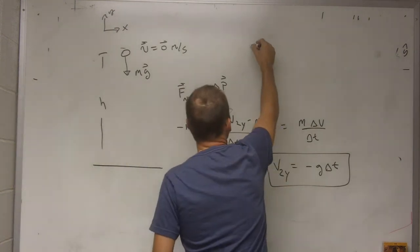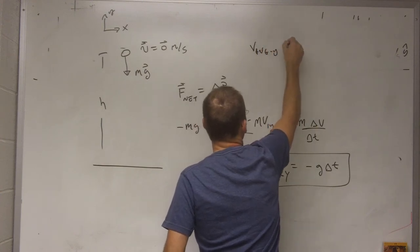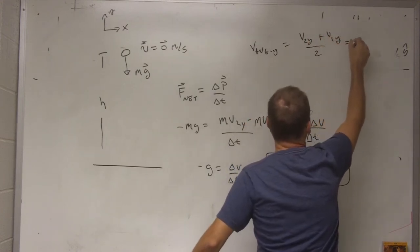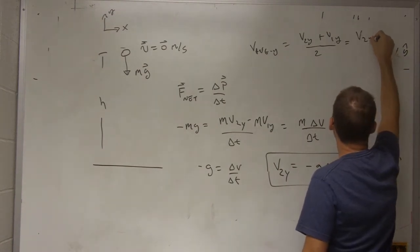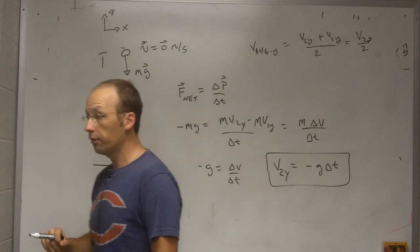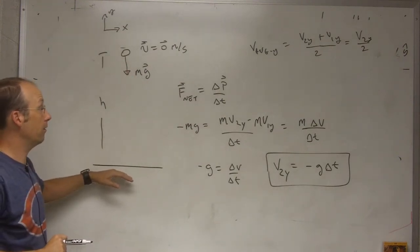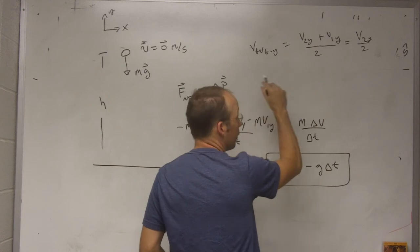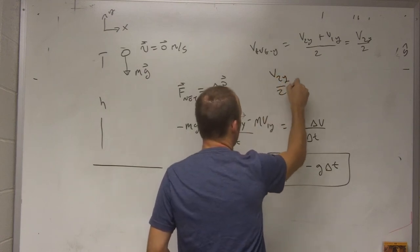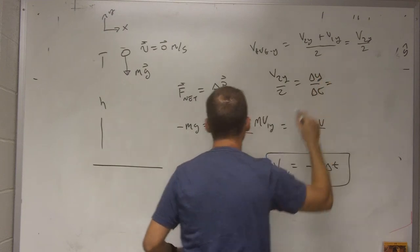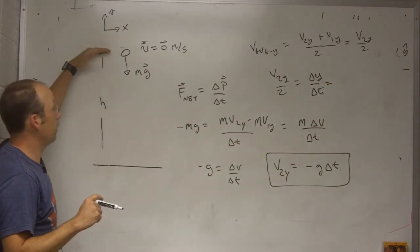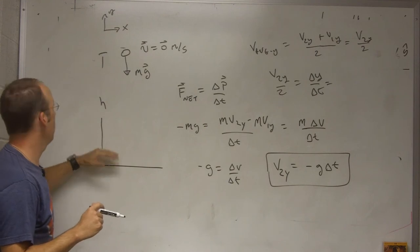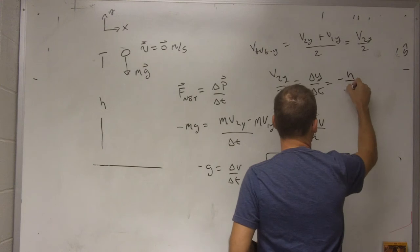So the average velocity in the y direction is going to be v_2y plus v_1y over 2, and that initial velocity was zero, so this is v_2y over 2. So that's the average velocity that falls down here. So then I can say that's also equal to delta y over delta t, because the average velocity is delta y over delta t. So v_2y over 2 equals delta y over delta t. And what's delta y? If this is y equals zero, and that's y1, then it starts off at h, and it ends up at zero. So the final is zero minus initial of h, so this is going to be negative h over delta t.